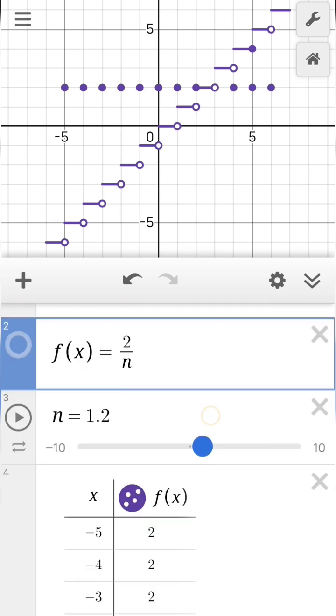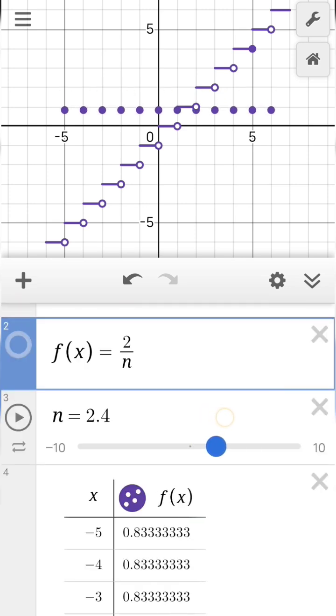As you can see the value of n is increasing and our greatest integer, this line is coinciding with 0.